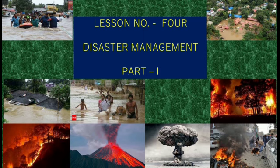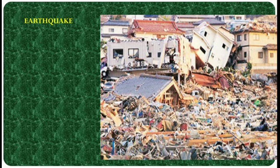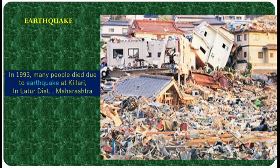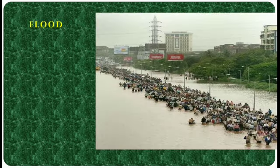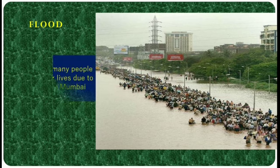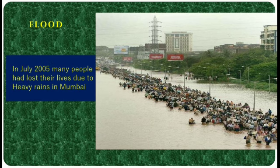You can see some incidents that occurred in various states of our country. This screen shows the effects of earthquake. In 1993, many people died due to earthquake at Killari in Latur district. This is the picture of our Mumbai city. In July 2005, many people had lost their lives due to heavy rains in Mumbai.